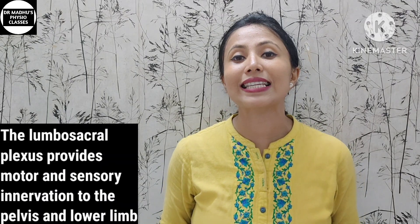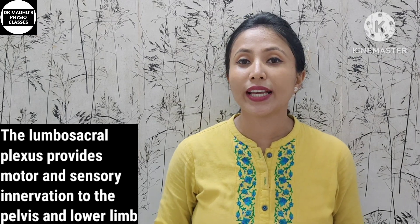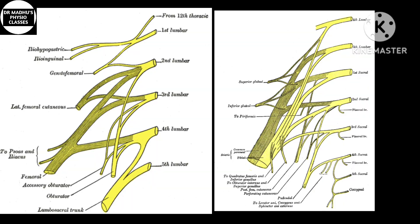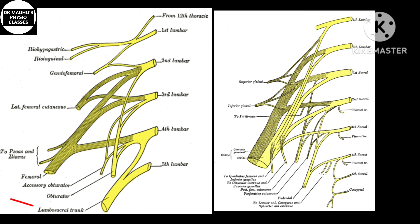For the pelvis and lower limb, we have the lumbosacral plexus, which consists of the lumbar plexus and sacral plexus. The lumbar plexus is made from the anterior rami of L1 to L4 nerve roots, and sometimes there is a contribution of T12. The sacral plexus is formed by the anterior rami of L4 to S4 nerve roots. These two plexuses are connected by the lumbosacral trunk.